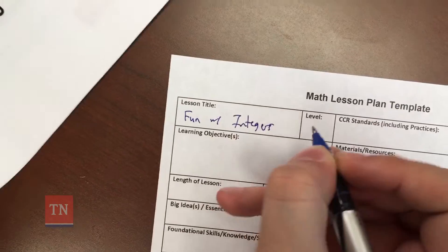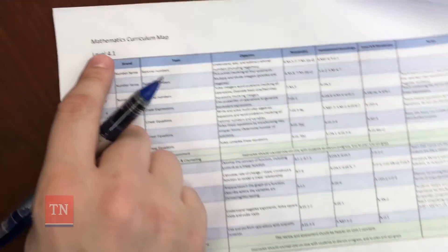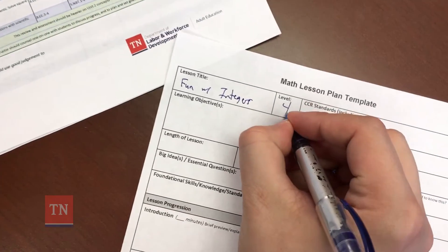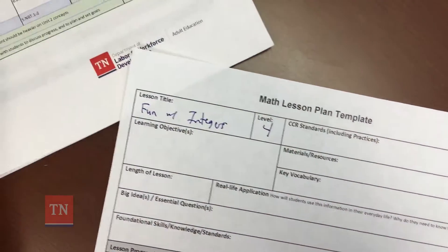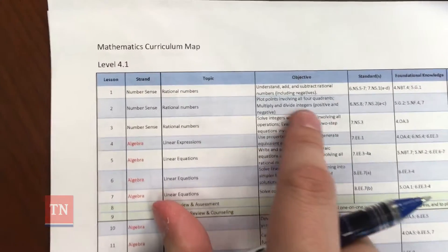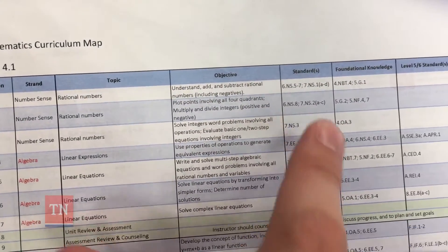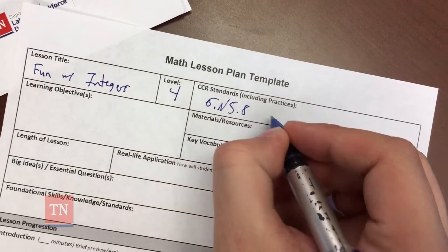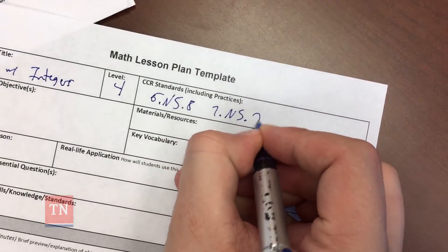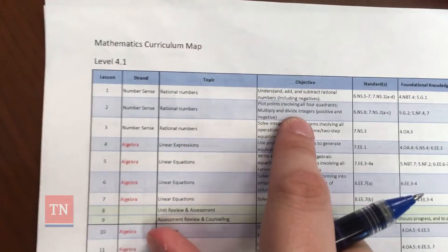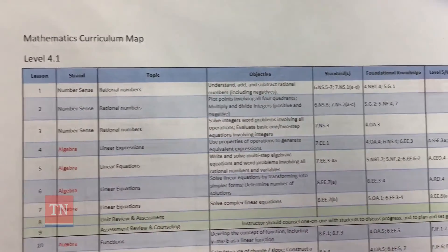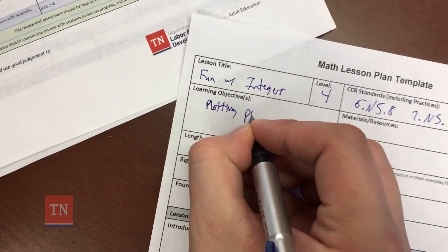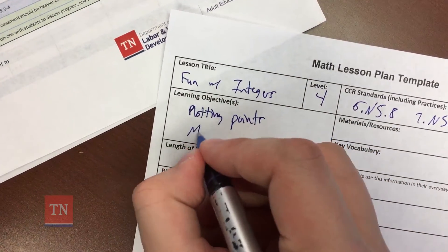Now, if I go back to my map, I can find the level that I'm teaching here on the map. In this case, the level I'm teaching is four. I can also get the standards that I'm teaching from the map here. In this case, the standards that I'm teaching are 6.NS.8 and 7.NS.2. Last, I can get the objective for the lesson I'm teaching here on my map, which is plotting points and multiplying and dividing integers.